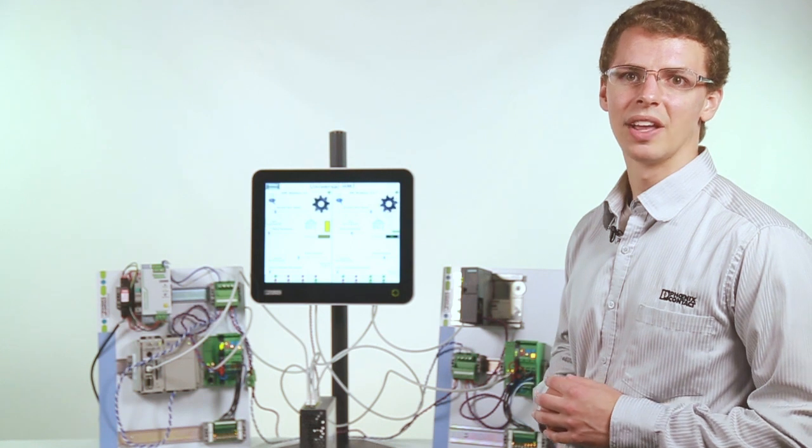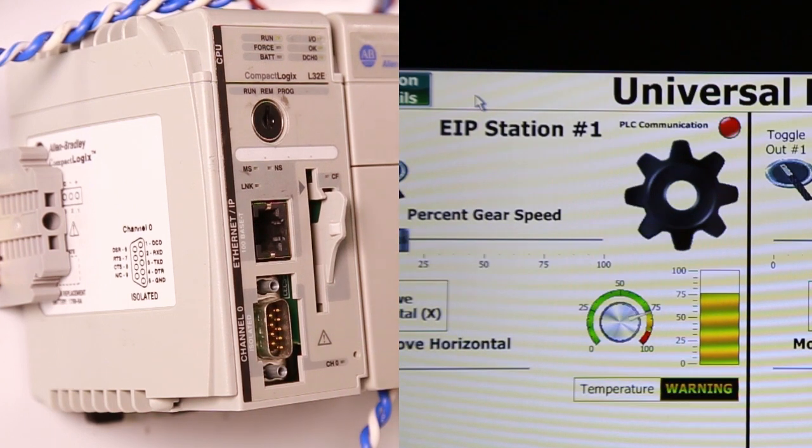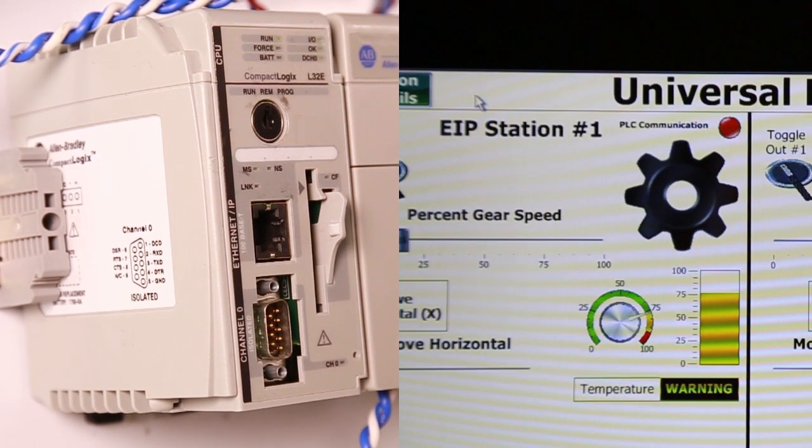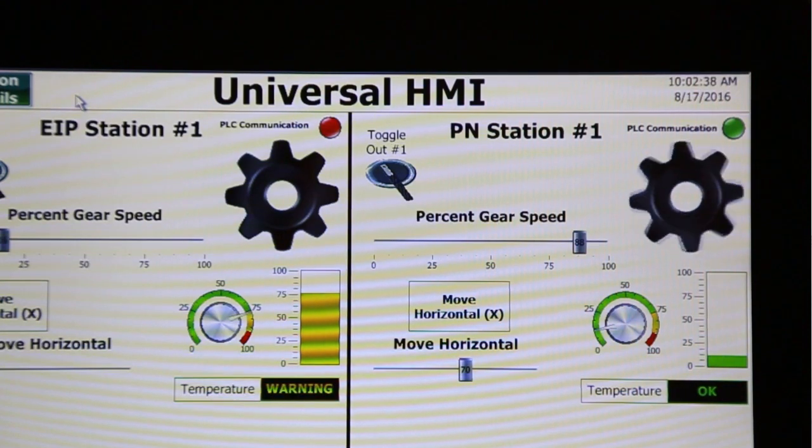On the Ethernet IP side, we'll see the same thing. Phoenix Contact's Universal HMI detects that the Rockwell PLC loses communication and stops updating those values, while the Profinet communication is still up and running.